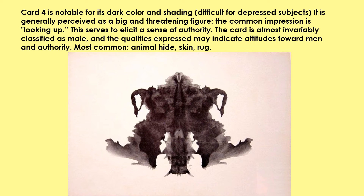Here's card four, which is very dark and shadowy. Almost everyone perceives it as masculine — like an authority figure, like your boss, your father, or a dictator. Depressed people often start crying or get emotional when they see this, and they might remember abuse in their background. People might say it's an animal hide, a skin, or a rug, but we don't care so much what they say it is. We care about their emotional reaction and what issues they want to talk about when they see this card.